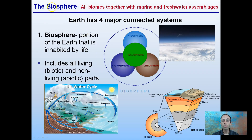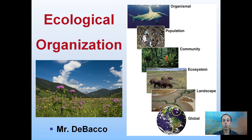How we link all of this together is the biosphere — the largest scale we're going to look at. This includes all the biomes together with marine and freshwater areas. The Earth has four major connected systems: the hydrosphere, the lithosphere, the atmosphere, and the ecosphere, all together creating the biosphere — the portion of the Earth inhabited by life. It includes all biotic and abiotic components. Going back to our first slide, we worked our way from the organism level up through population, community, ecosystem, and landscape, forming our entire ecological organization.